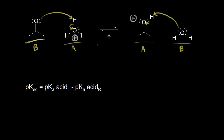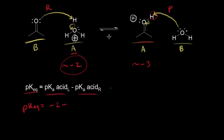To use pKa values to predict the position of equilibrium, we find the pKa for the acid on the left and subtract the pKa for the acid on the right. The acid on the left is hydronium, with a pKa of approximately negative 2. The acid on the right has a pKa of approximately negative 3. So the pKeq equals negative 2 minus negative 3, which equals positive 1.